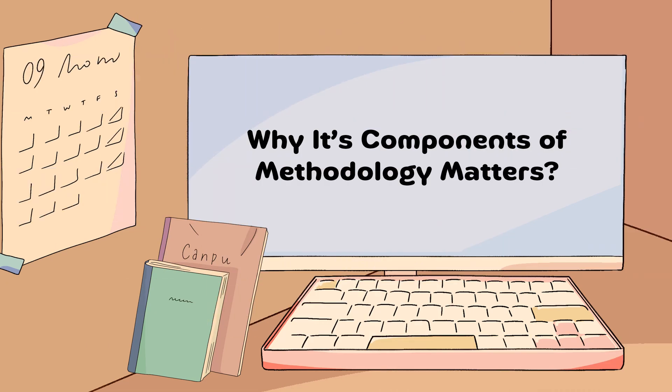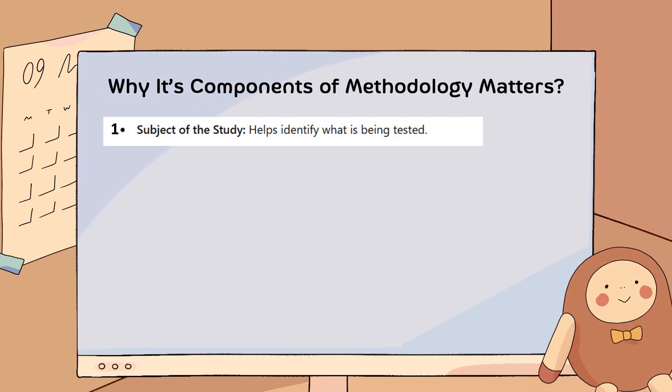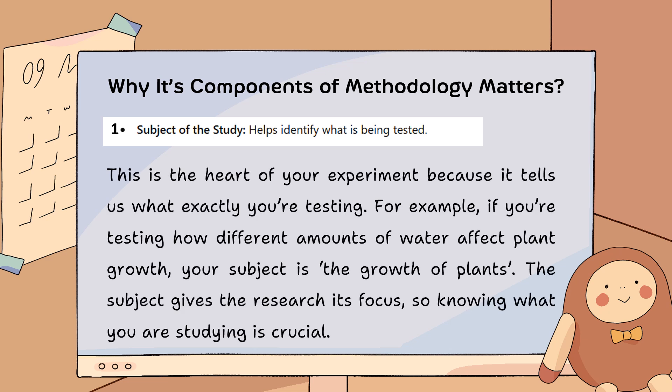Why do the components of methodology matter? First, the subject of the study helps identify what is being tested — it is the heart of your experiment because it tells us exactly what you're testing. For example, if you're testing how different amounts of water affect plant growth, your subject is the growth of plants. The subject gives the research its focus, so knowing what you are studying is crucial.